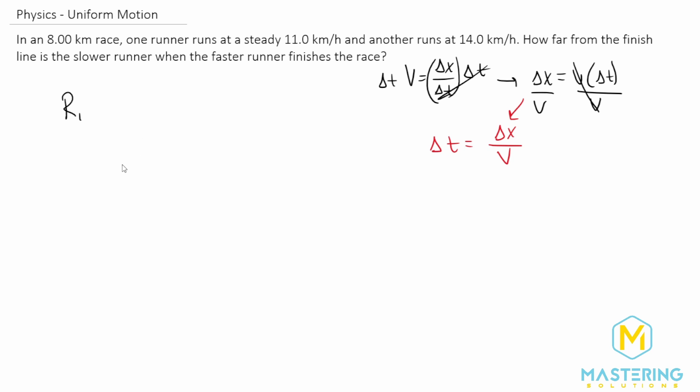All right, so now let's plug that in here. So runner one, the delta t equals the distance, and it's eight kilometers for both because they're both running the same race. And then the velocity that the faster runner ran it in was 14 kilometers per hour.